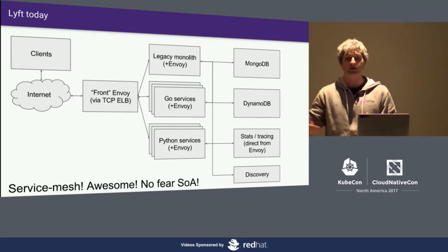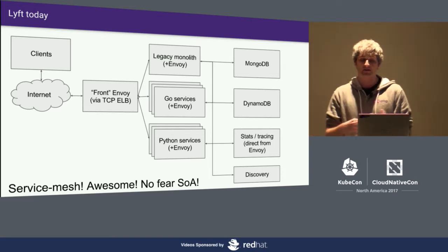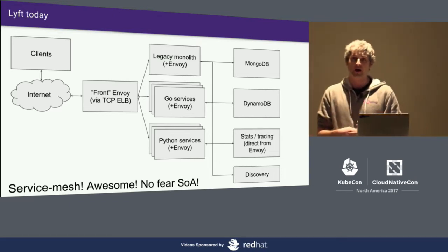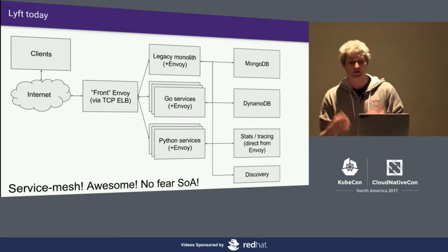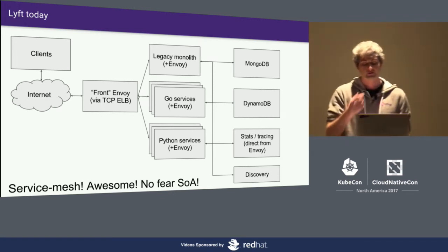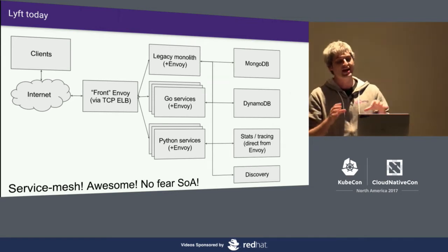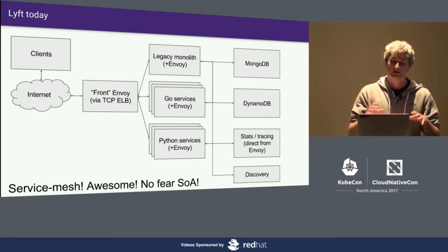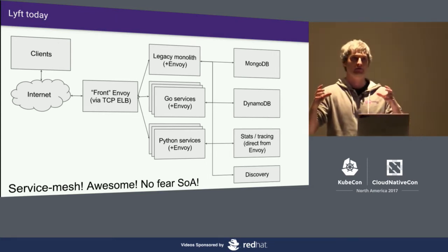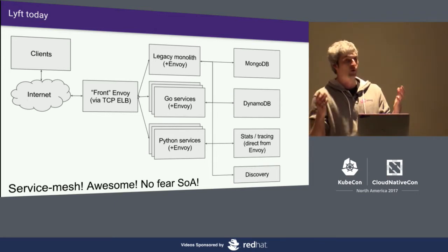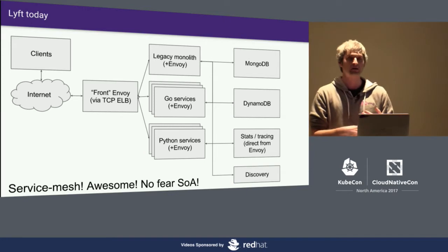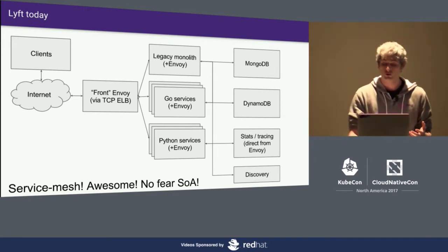On the back end we have MongoDB, DynamoDB, and we're starting to use Spanner from Google. We do a whole lot of stats and tracing. The important takeaway is that we run Envoy on each and every node, so every hop from ingress to egress has a point-to-point link of stats, tracing, and logging that we can look at to actually understand what is going on.